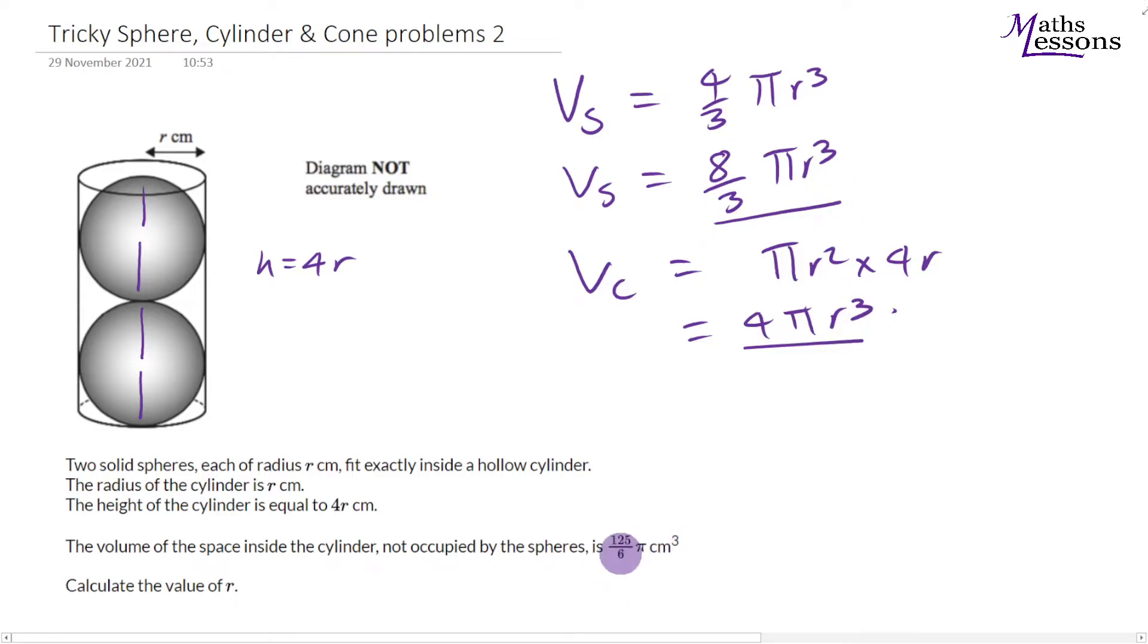So we know that 4 pi r cubed minus 8/3 pi r cubed will equal 125 over 6 pi. Now straight away we can cancel out all the pi. We've got pi here, a pi here and a pi here. So we divide throughout by pi.